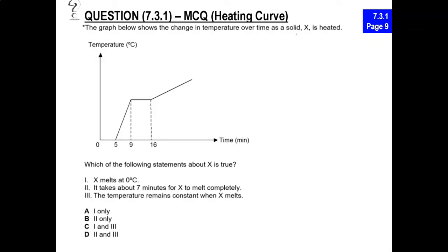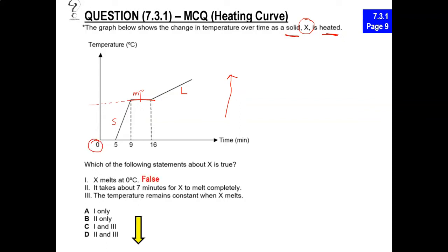This MCQ question: we are given a solid, so at the starting temperature X is a solid and it's heated. This is a heating curve where the temperature rises. The flat portion of the curve where the temperature remains constant has to be the melting point. X melts at zero degrees Celsius — that is not true because zero degrees Celsius is here, so that is a false statement. The melting point is more than zero degrees Celsius.